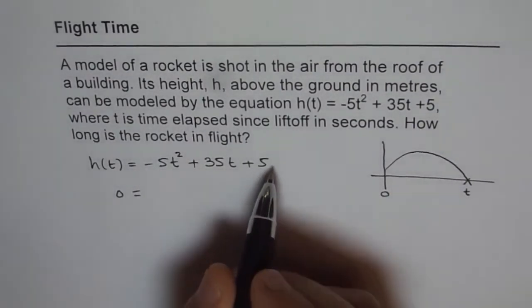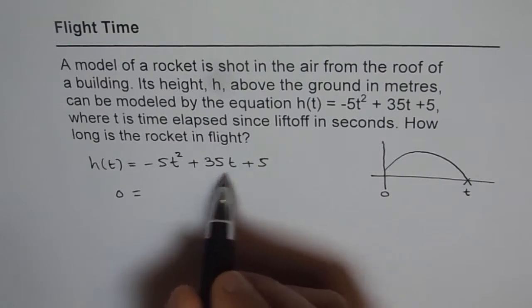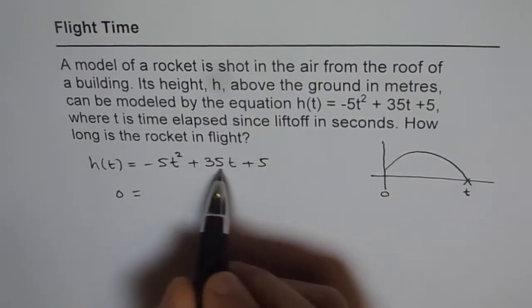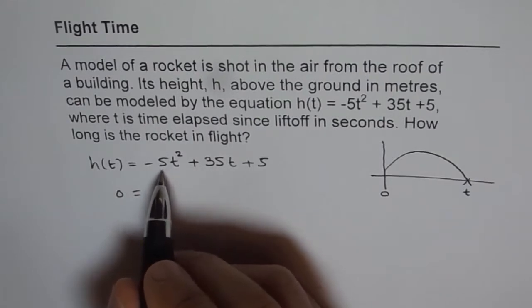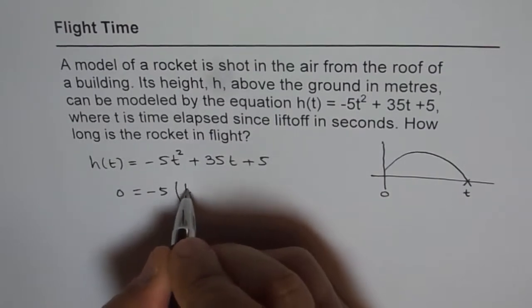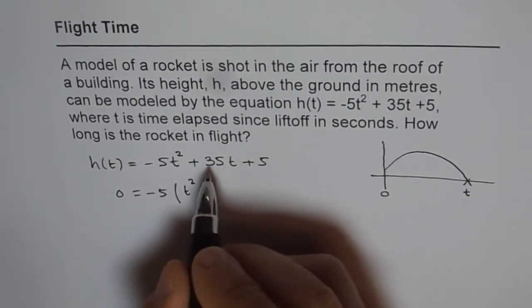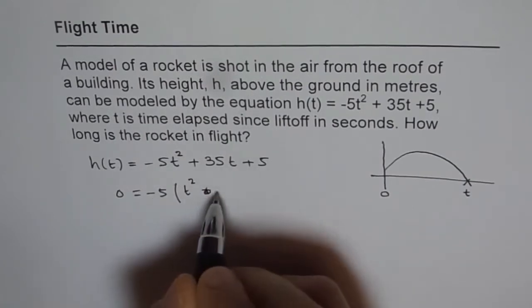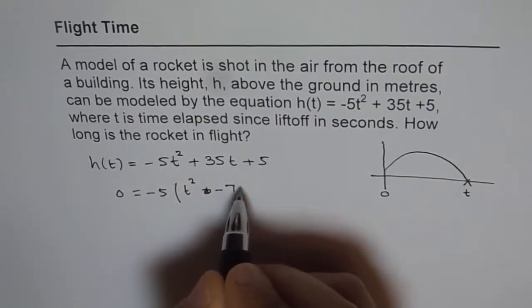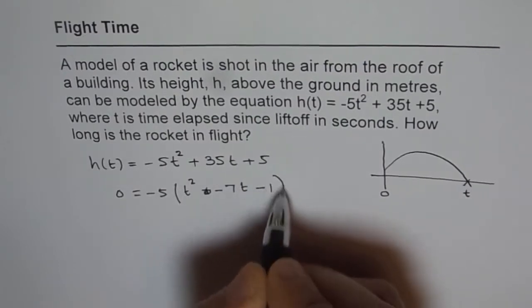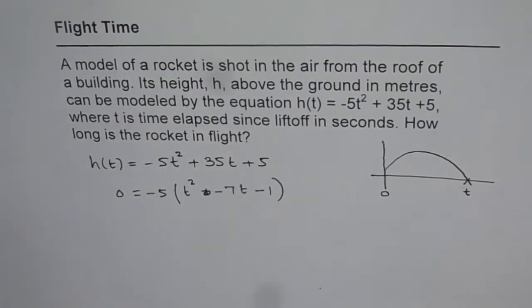So to find the time, we may factor this or use quadratic formula. We can see that all three have a common factor of -5. So we can factor -5 out and simplify it. So we have t² and plus becomes minus when you factor out -5, so you get -7t. And this also changes sign to -1, 5 divided by -5. So now we have a factored form.